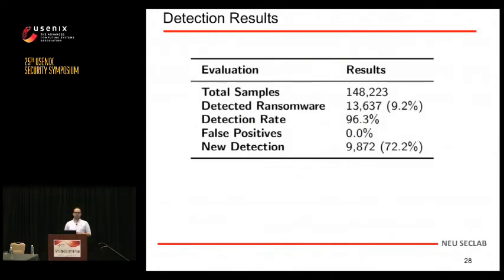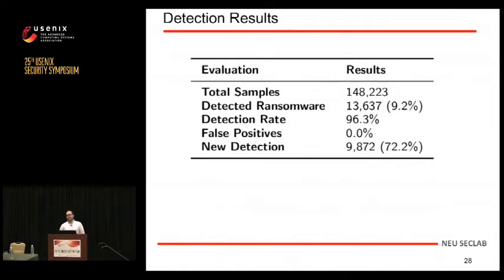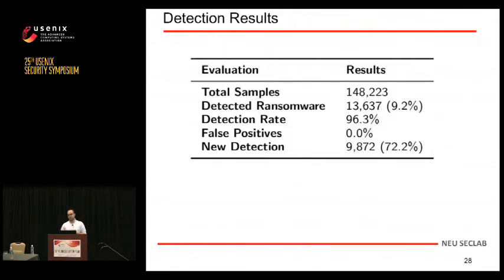This is a summary of our detection results. We had zero false positive cases, at the cost of not detecting all ransomware in our dataset. As mentioned, 72% of the samples were new detections. We detected 9.2% of the samples as ransomware, including both cryptographic ransomware and desktop blockers — around 20% of those were desktop blockers.